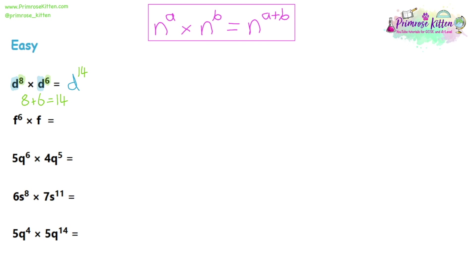The main difference between doing this with algebra and doing this with numbers is that we have a letter in our answer — the D — whereas previously with just numbers, we'd have a number there with a power.